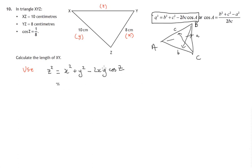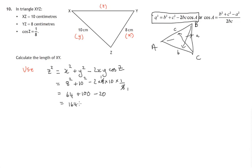Now we do have all these values: little x is 8, little y is 10, that'll be minus twice 8 times 10, times the cosine of Z, which we're conveniently given as 1 eighth. So 8 squared is 64, 10 squared is 100. A bit of cancelling goes on here — 8 and 8, 8 into 8 goes 1 — we're left with 2 times 10, which is 20. We've got 164 minus 20, which is 144. Now that'll give us z squared, so we must square root both sides to get z. Lengths are always positive, and the square root of 144 is 12.